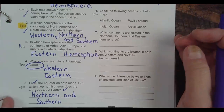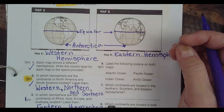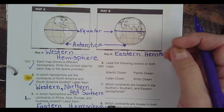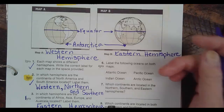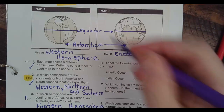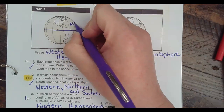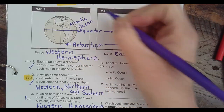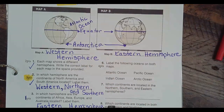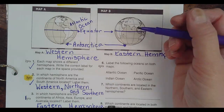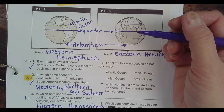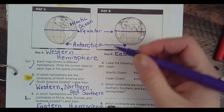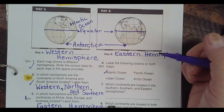Number six: label the following oceans on both maps. Where do we find the Atlantic Ocean? Is the Atlantic Ocean in map A or map B? Map A. So the Atlantic Ocean is over here — A-T-L-A-N-T-I-C, Atlantic Ocean. If I have time to write it out, you have time to write it out.